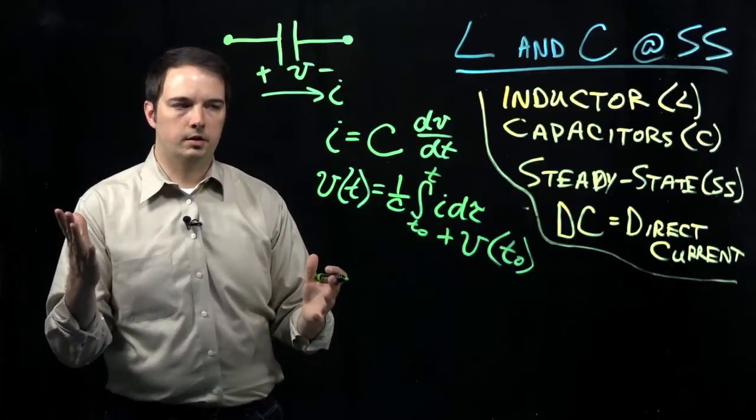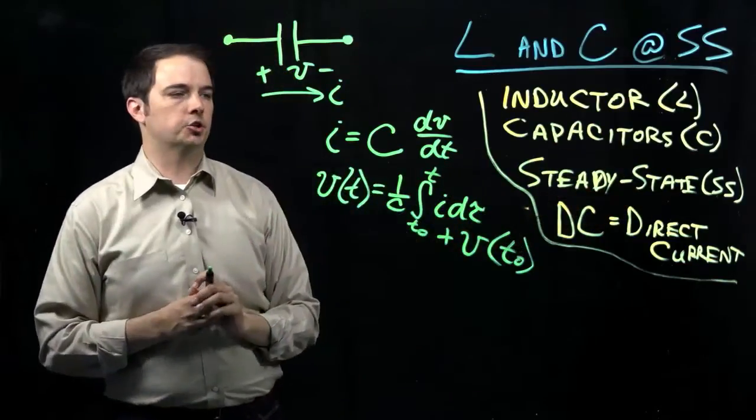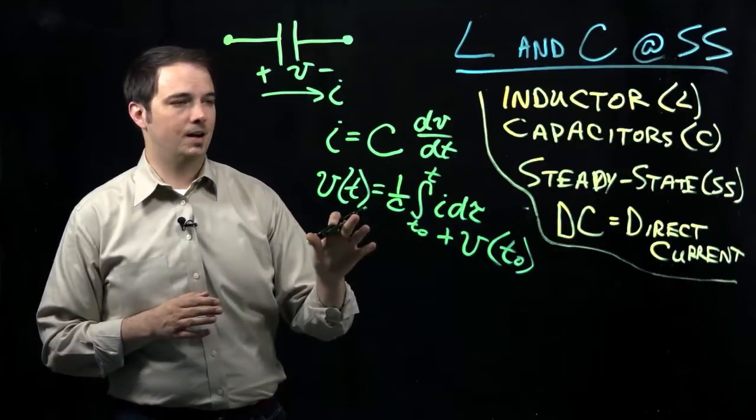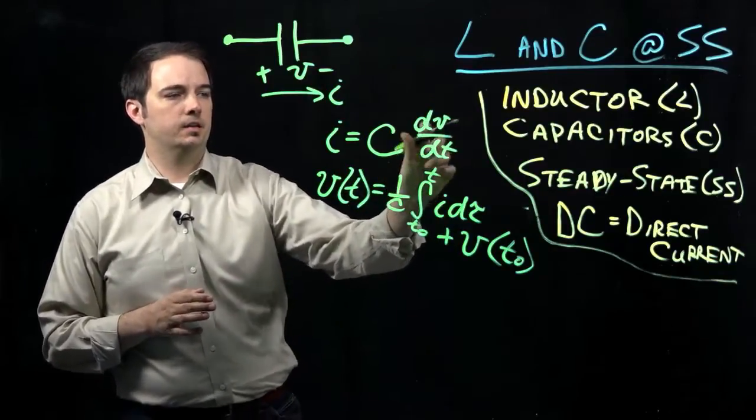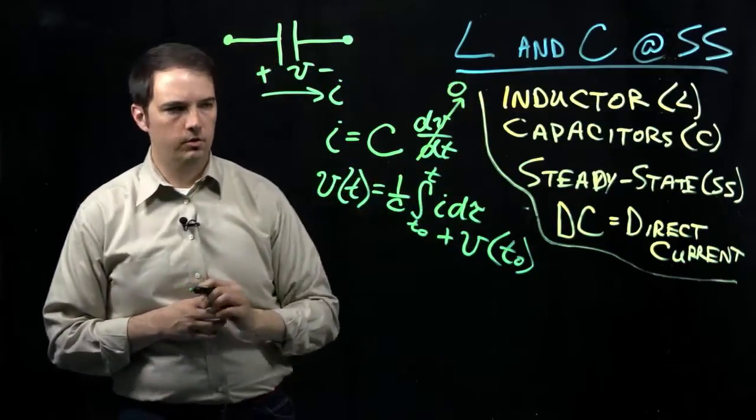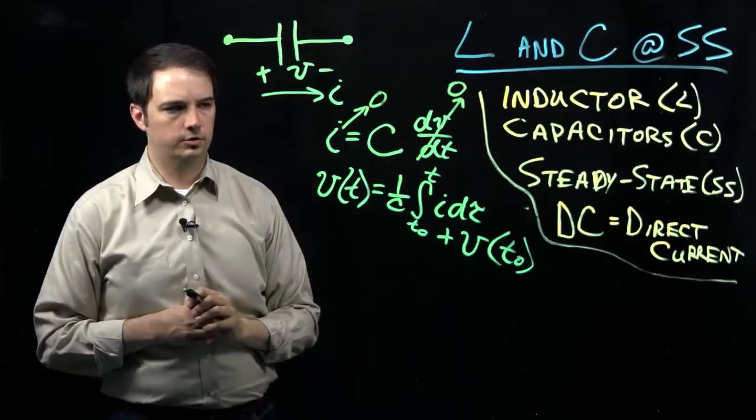So now, similarly, as we talked about when we're talking about the DC steady state condition, if we're in a steady state condition, therefore there's no changes in the voltage or the current with respect to time, then under that case, this DV DT would also have to go to zero, and thereby this current I will also have to go to zero.